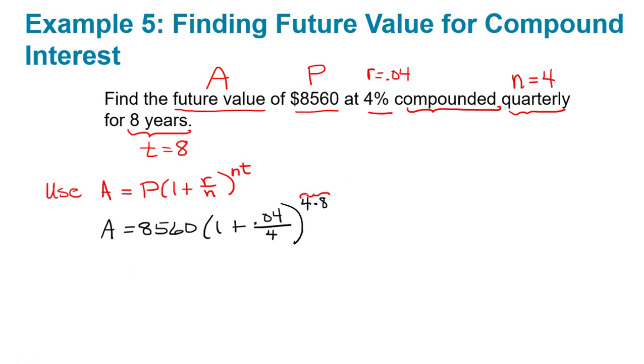For example, n times t. 4 times 8 is 32, and we don't have to round anything off. That's an exact value.